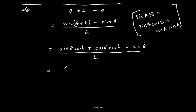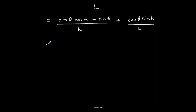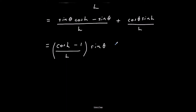We split off the sine theta terms from the cos theta terms. The sine theta part is (sine theta cos h − sine theta) over h, and the cos theta part is (cos theta sine h) over h. Factorising: sine theta times (cos h − 1)/h, plus cos theta times sine h/h.